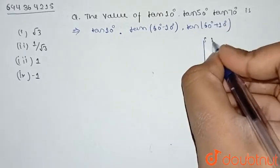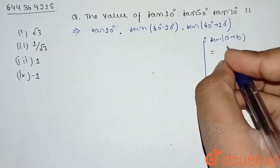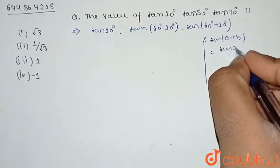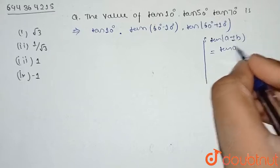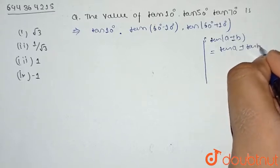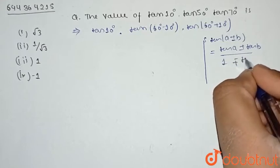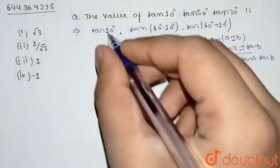Now we know a formula that tan(A ± B) is equal to (tanA ± tanB) / (1 ∓ tanA·tanB).